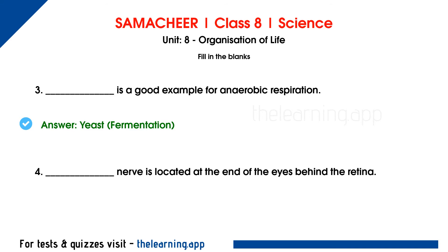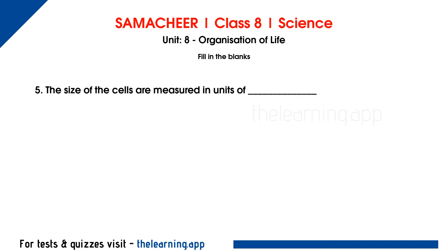Fourth question: Dash nerve is located at the end of the eyes behind the retina. The correct answer is optic nerve. The light rays fall on the retina and are converted into impulses, which are electric signals. The optic nerve carries these impulses to the brain. Fifth question: The size of cells is measured in units of dash. The correct answer is micron.